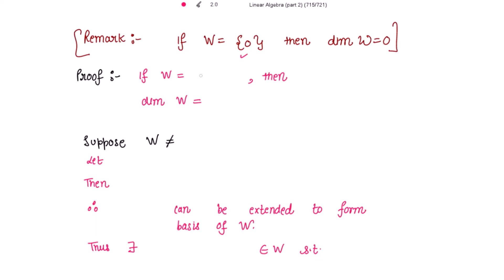Suppose first of all W equals the singleton set containing only the zero element. Then I know that dimension of W is zero. This zero is obviously less than or equal to the dimension of V because V is finite dimensional. So the proof is over in this case — if W equals the singleton set with the zero element, there is nothing to prove.